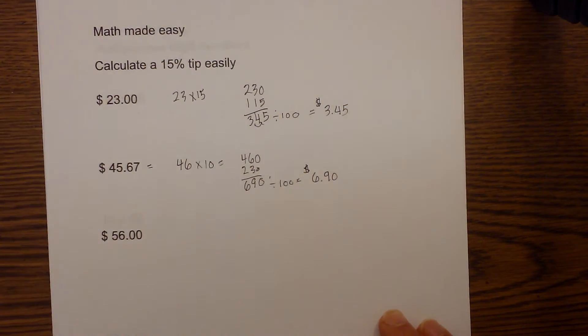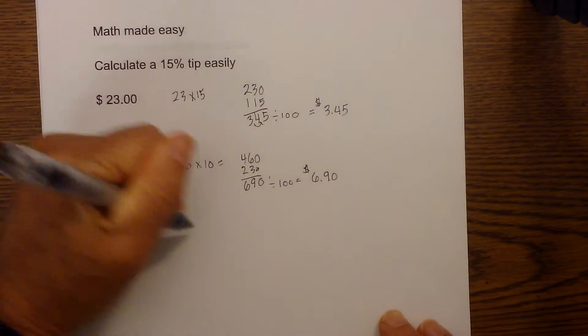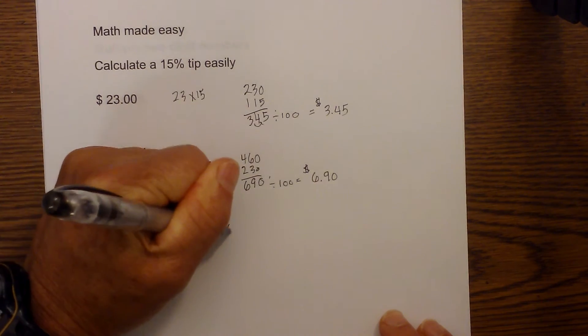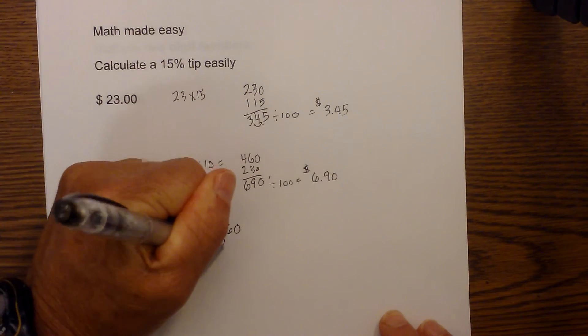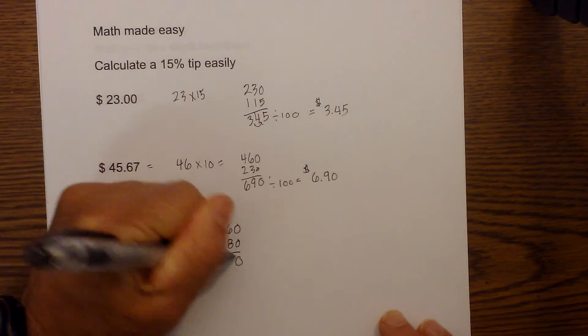And last but not least, the bill comes back and it is $56. 56 times 10 is 560. Half of 560 is 280. And then we add these together.